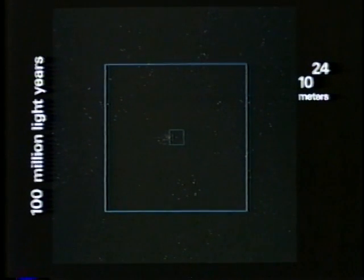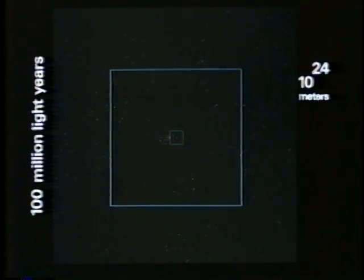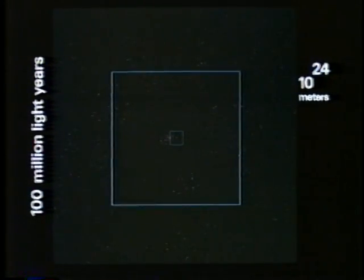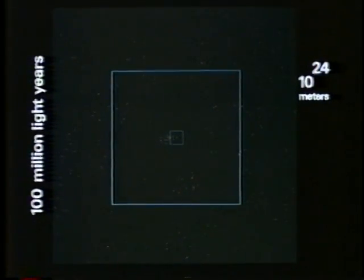As we approach the limit of our vision, we pause to start back home. This lonely scene, the galaxies like dust, is what most of space looks like. This emptiness is normal. The richness of our own neighborhood is the exception.